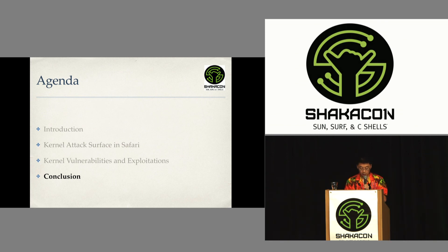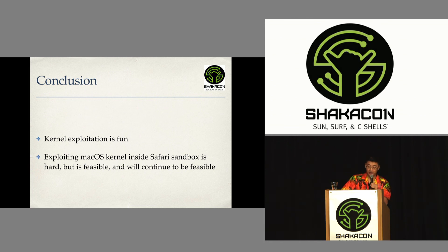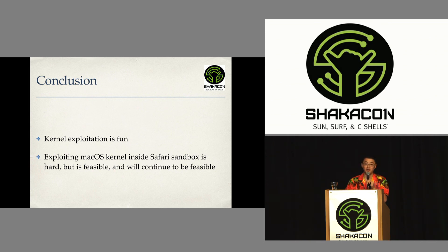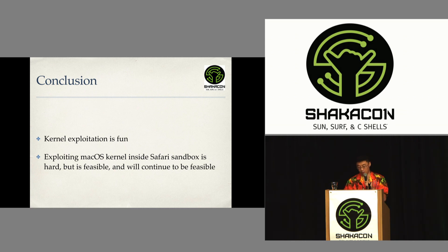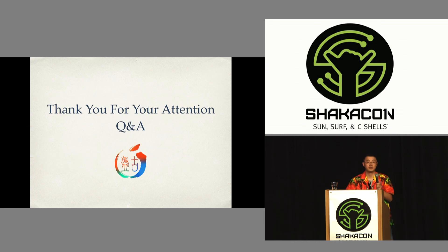For the first two vulnerabilities, they were fixed in macOS 10.12.3 on January 23rd this year, with two CVE numbers. We used these two vulnerabilities in PwnFest last year. The third one has no public CVE as far as I know. To conclude: finding these vulnerabilities is not easy because only a limited number of IOKit drivers can be opened by the web process, and these drivers are reviewed by many parties — Apple and different security researchers — with a lot of bugs already fixed. But the whole process is rewarding: you will see many undocumented features in the kernel and find new attack surfaces. Directly exploiting macOS kernel inside the Safari sandbox is hard, but as we proved, it's feasible. We believe it will continue to be feasible because we will continue to find new bugs, and Apple programmers will continue to make mistakes. Thank you for your attention — I'm glad to answer your questions.